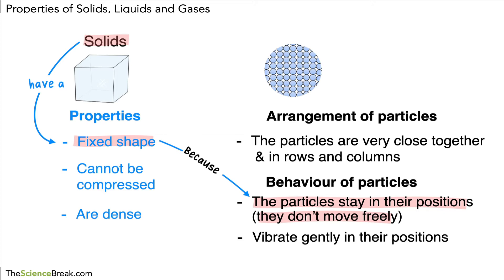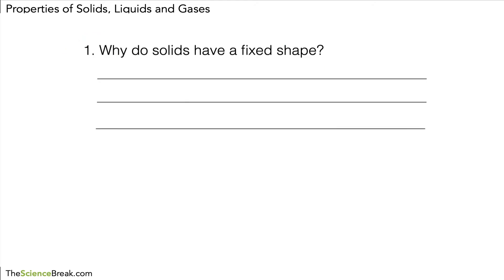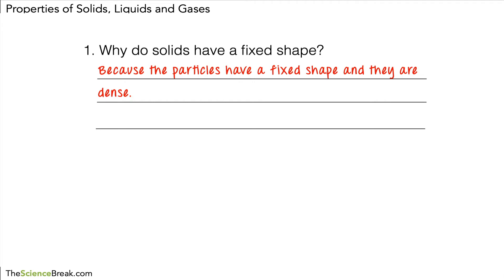You mustn't mix up the properties with the behavior of the particles. Here's a question you might see: 'Why do solids have a fixed shape?' Someone has written: 'because the particles have a fixed shape and they are dense.' This wouldn't score marks, because you are giving the particles the properties of the solid. We say the solid has a fixed shape — we don't usually describe the particles as having a fixed shape.